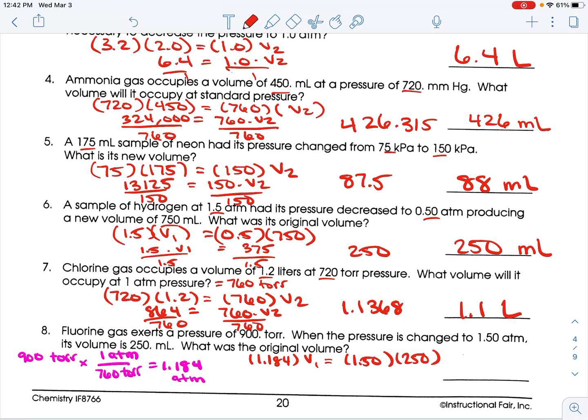So, 250 times 1.5 gives me 375. And we have 1.184 V1. Divide both sides by 1.184, and you get 316.72. That's three sig figs, three sig figs, three sig figs. So, we need three sig figs. That would become 317, and that would be milliliters.